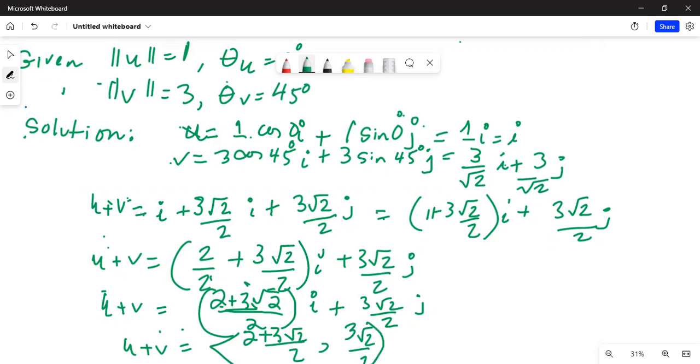This should be written correctly. Let me erase this. This is 3 square root of 2 over 2 and the symbol is like this. I will write it again so that you do not miss it. It is 2 plus 3 square root of 2 over 2 comma 3 square root of 2 over 2. This is the vector notation of u plus v.